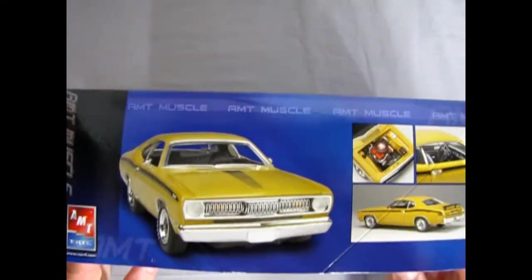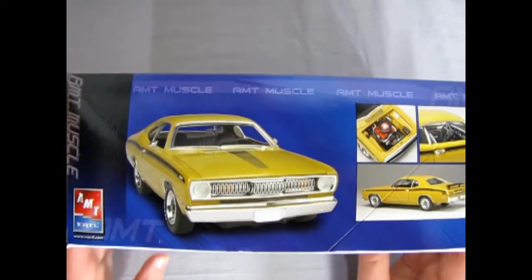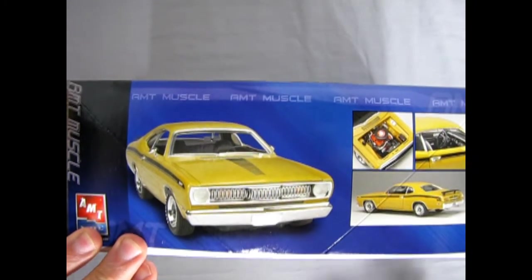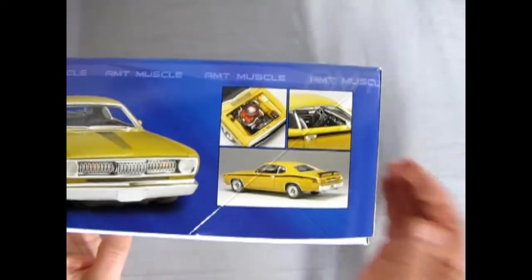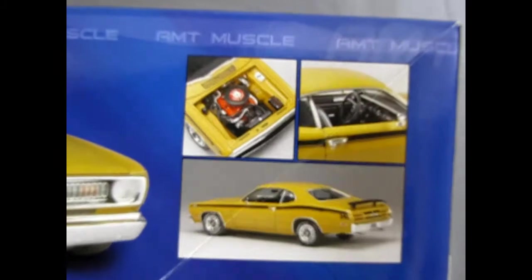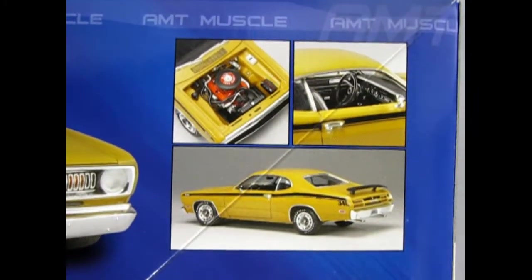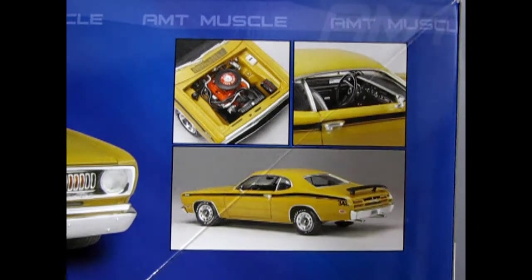Flipping this up on the side you can see that very popular kind of yellow color they had back in the day. Sort of a mustard color. Zoom in here. There's our engine bay, our interior, and the rear three quarters of the car.